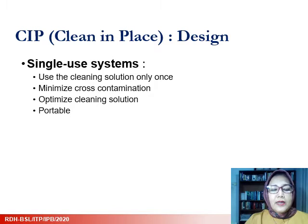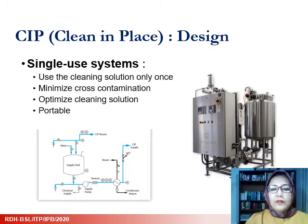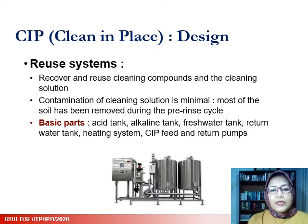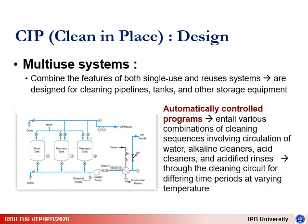There are several CIP design types. The first is a single-use system where the cleaning solution is used only once, minimizing cross-contamination while optimizing the cleaning solution — some units can be portable. The second is a reuse system where cleaning compounds and solution are recovered and reused, with contamination minimized by removing soil during the pre-rinse cycle. The third is a multi-use system combining single-use and reuse systems — an automatically controlled program with various combinations of cleaning sequences involving circulation of water, alkaline cleaners, acid cleaners, and acidified rinses through the cleaning circuit for different time periods at varying temperatures.